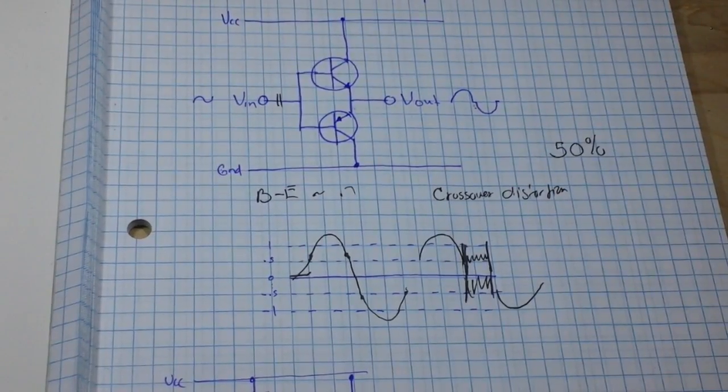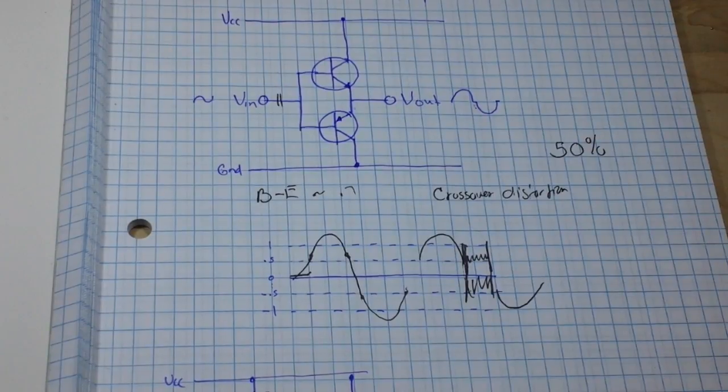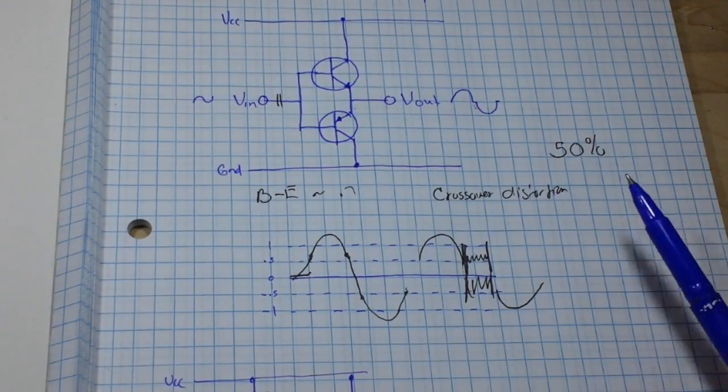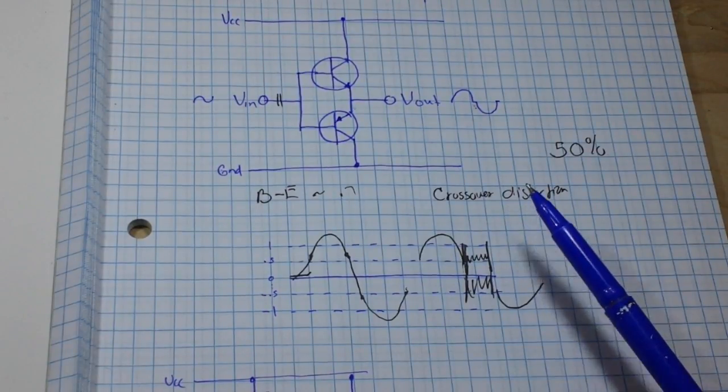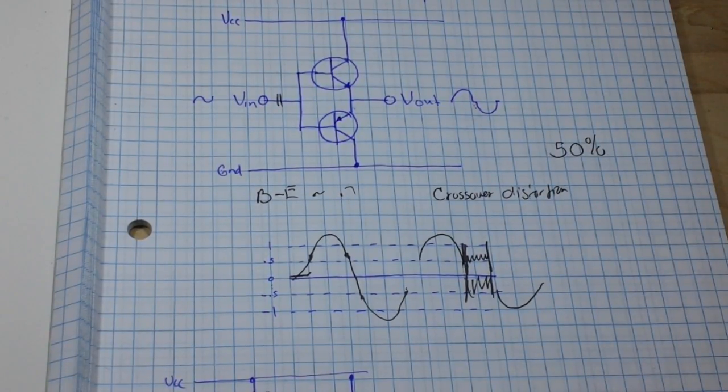So we looked at the Class A: lots of gain, not very efficient. The Class B: much more efficient, but now we have crossover distortion. What else can we do?